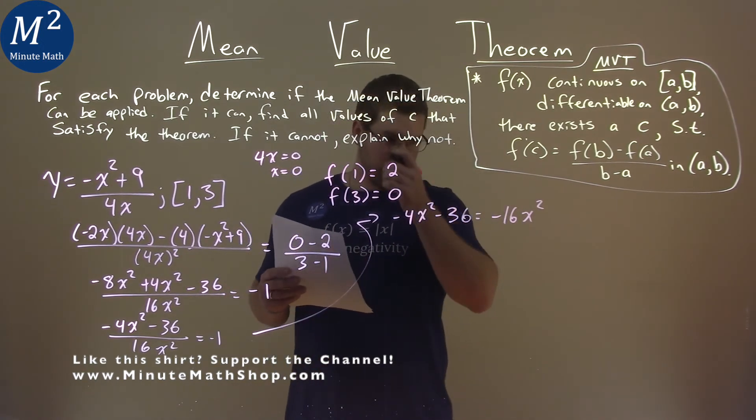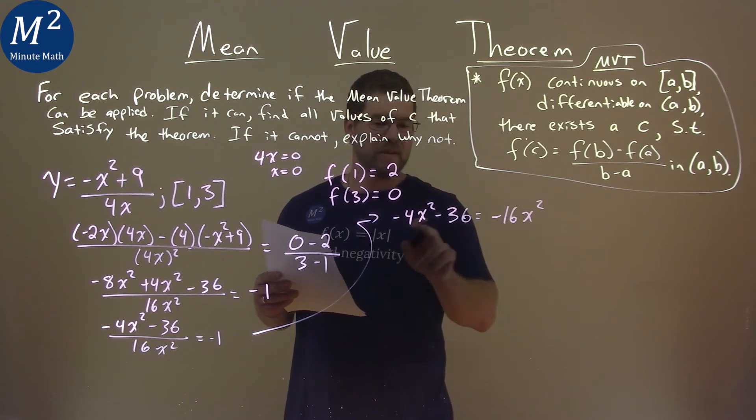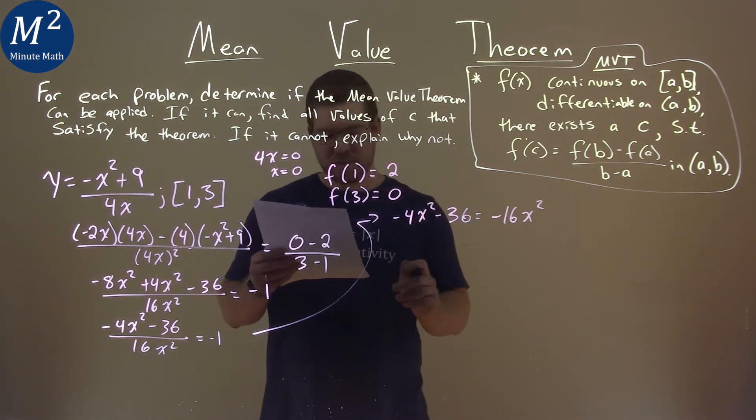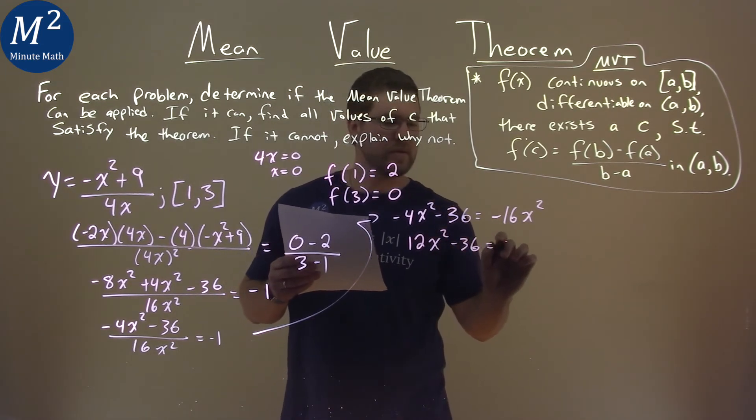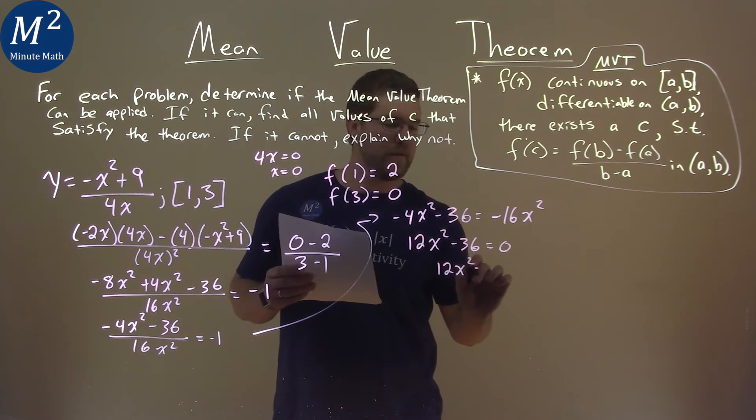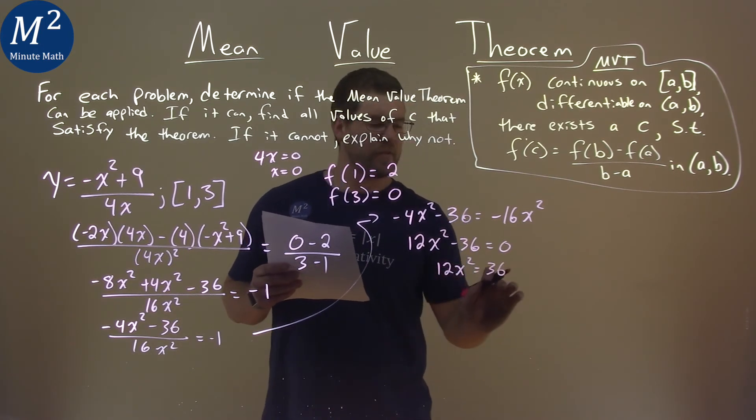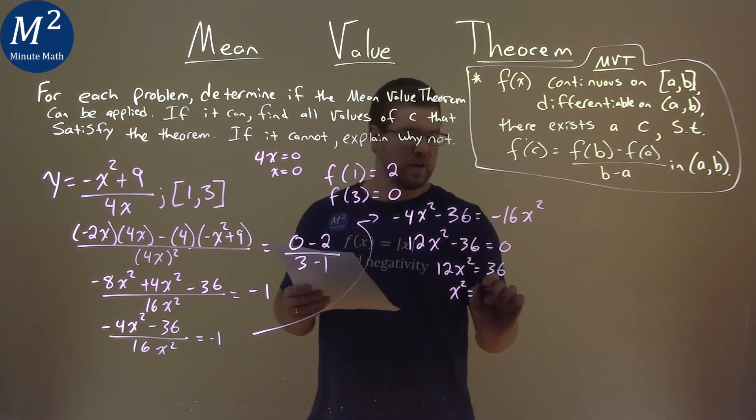So now let's go solve for x. I'm going to add 16x squared to both sides, and 16x squared plus negative 4x squared is positive 12x squared minus 36 equals 0. Subtract or add 36 to both sides, and we have 12x squared equals 36. Divide both sides by 12, and x squared is equal to 36 divided by 12, which is 3.